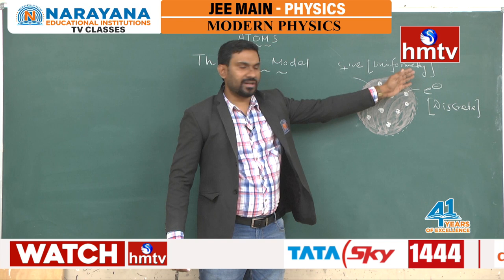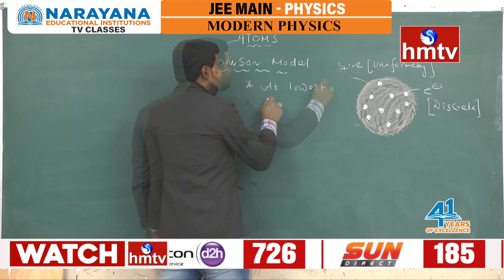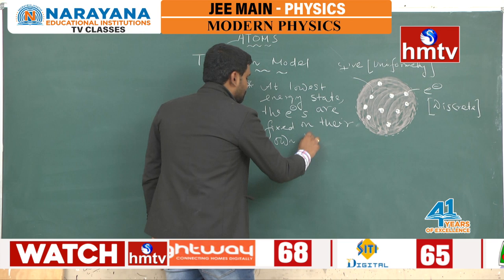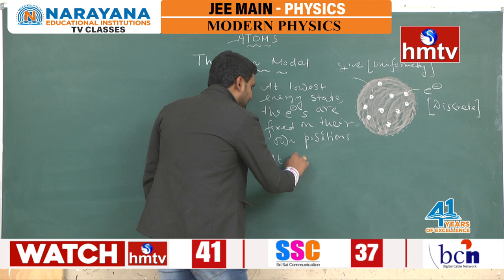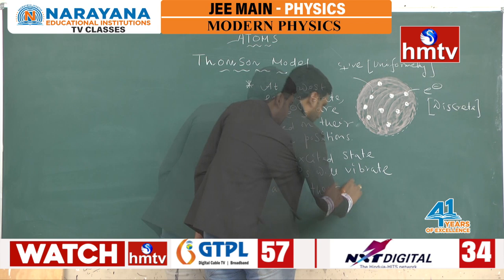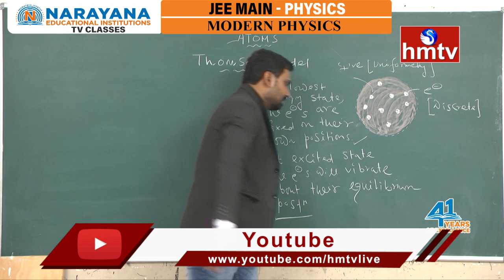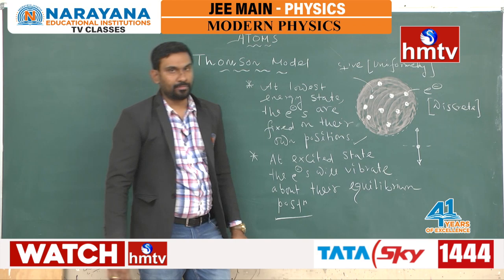The second important point: Thomson suggested that at the lowest energy state, the electrons are fixed on their own positions. At the excited state, the electrons will vibrate about their equilibrium positions. So, at lowest energy state they are fixed, and at excited state they vibrate about the equilibrium position.